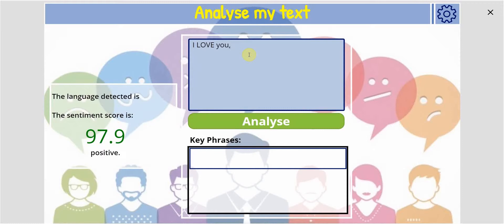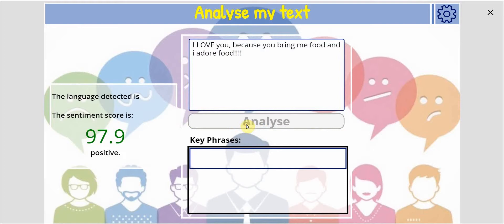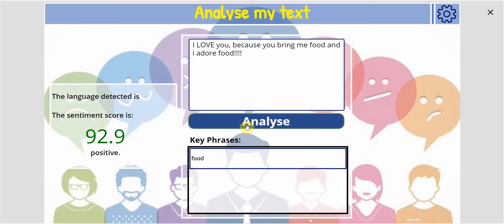It's good — it's high, it's positive. Then let's back it up to try and get some key phrases: 'because you bring me food, and I adore food.' Let's put some exclamation marks. Let's analyze that. And there you go — still very positive, and the key phrase there is food.